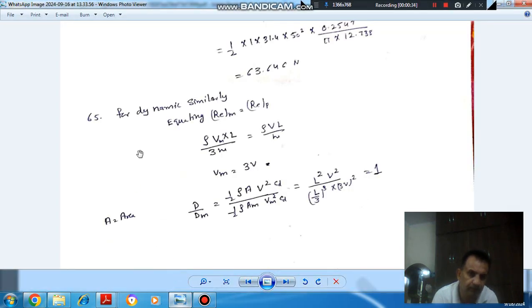So here as model and prototype are dynamically similar, the Reynolds number of model equals Reynolds number of prototype. As the scale of the model is 1 by 3, so if we take the length of the prototype as L, then the length of the model will be L by 3.